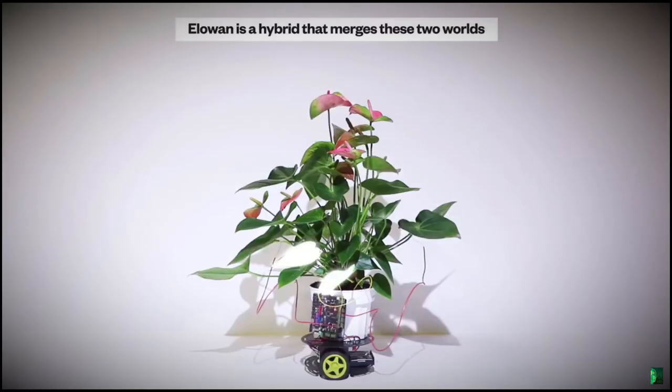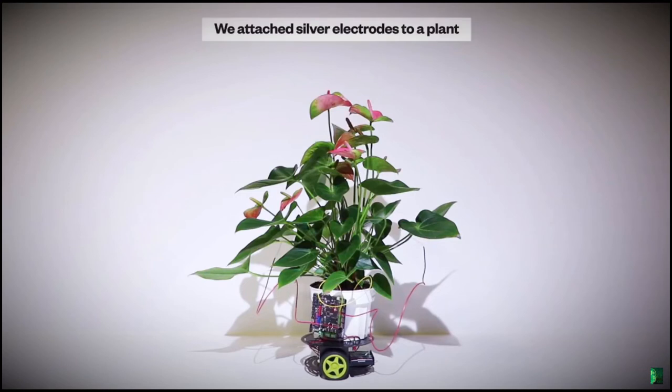ELO-1 is a hybrid that merges these two worlds. We attach silver electrodes to a plant, read and amplify its natural signals and route them to a robot under the plant.